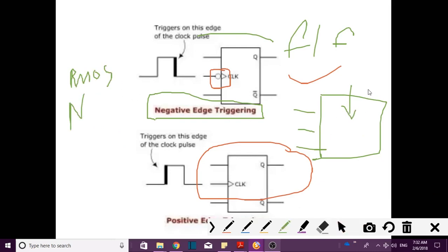What happens is most of the ICs will be configured using NMOS technology. So this is the reason why they use negative clock pulse. Another reason is in NMOS technology, the electron flow will be more, which means it will be faster.